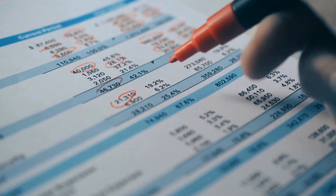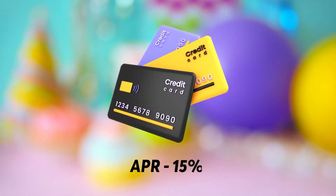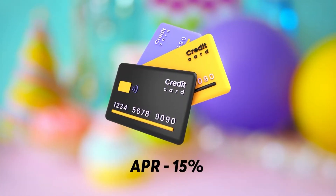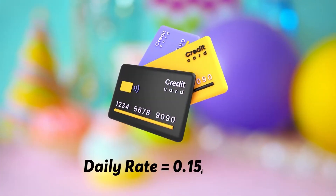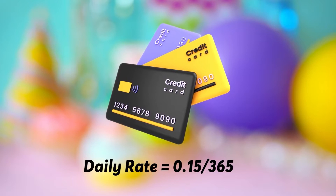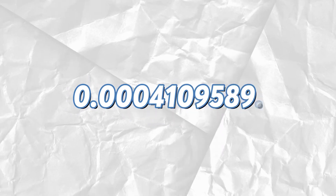For instance, if your credit card has an APR of 15%, the daily rate will be 0.15 divided by 365, or 0.0004109589.